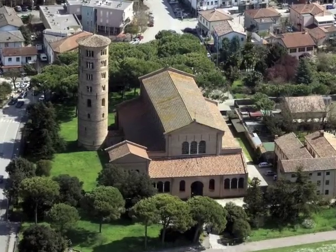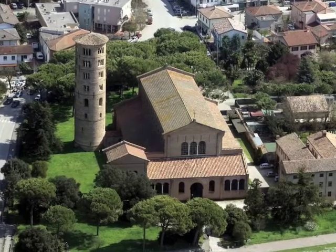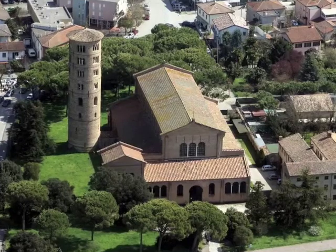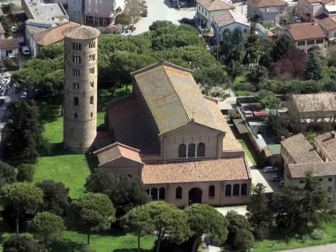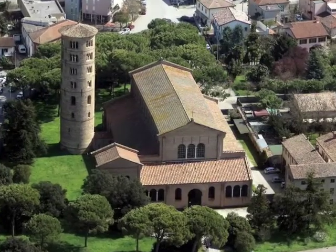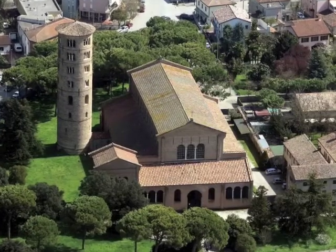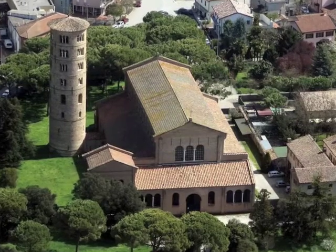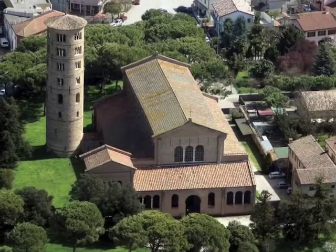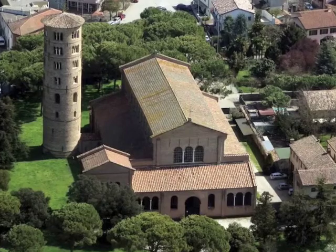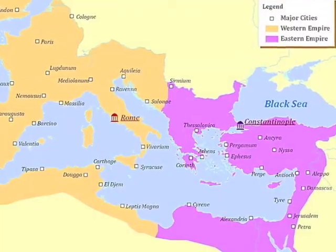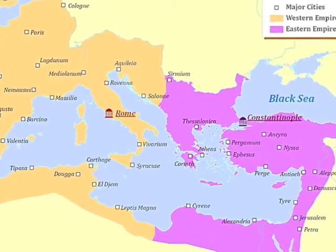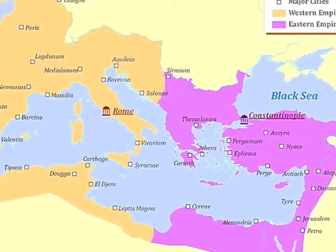We'll be looking at a typical early Christian basilica church plan and how this plan is inspired by earlier, pre-Christian basilicas built by the Romans. We are using the word basilica to refer to a particular type of Christian church architecture that developed between the 4th and 6th centuries. This period, between 300 and 600, was a time when Christianity was establishing itself as a major religion in what had been the Roman Empire.